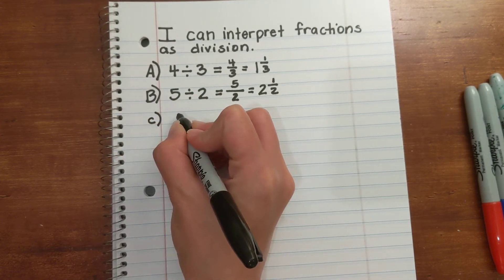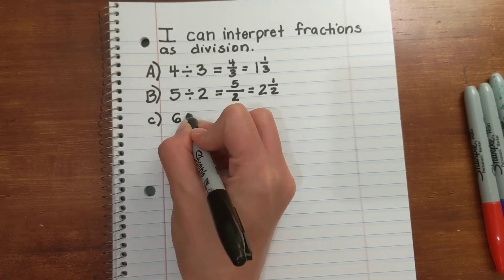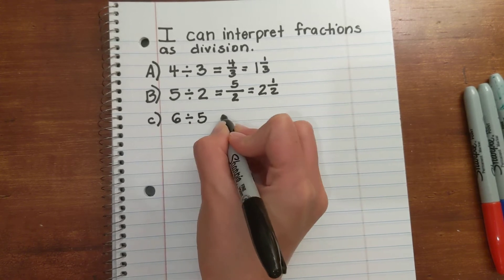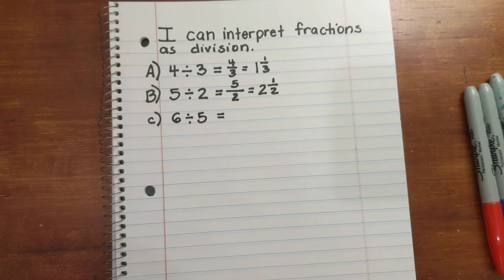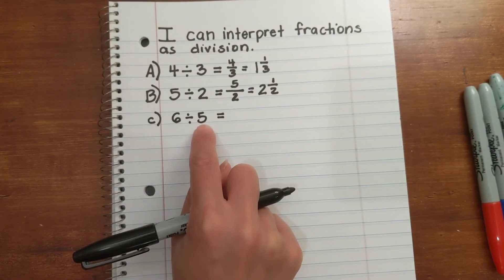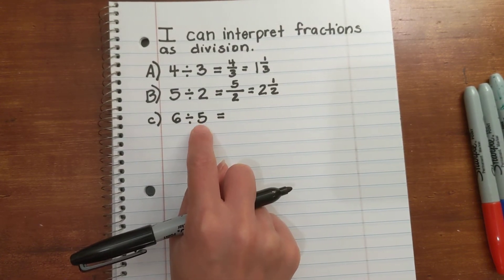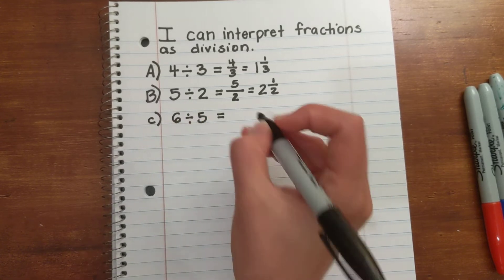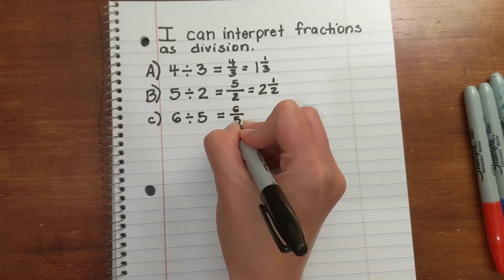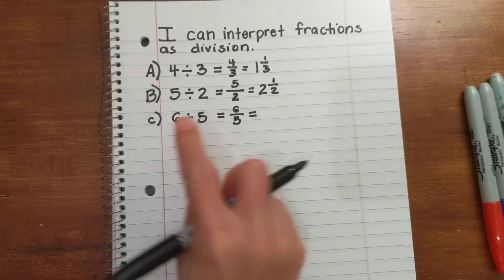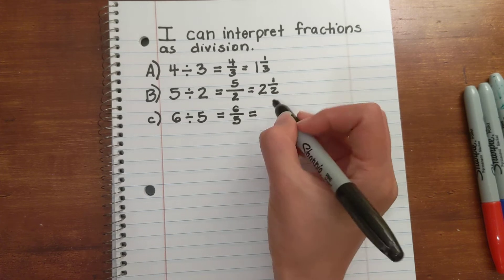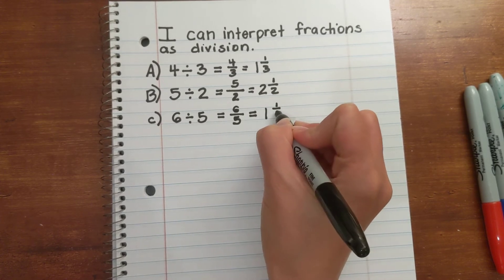Let's do 6 divided by 5. 6 is your dividend and 5 is your divisor. So you have 5 parts that you're dividing the 6 wholes into. 6 divided by 5 is equal to 6 fifths, and it's also equal to 1 and 1 fifth.